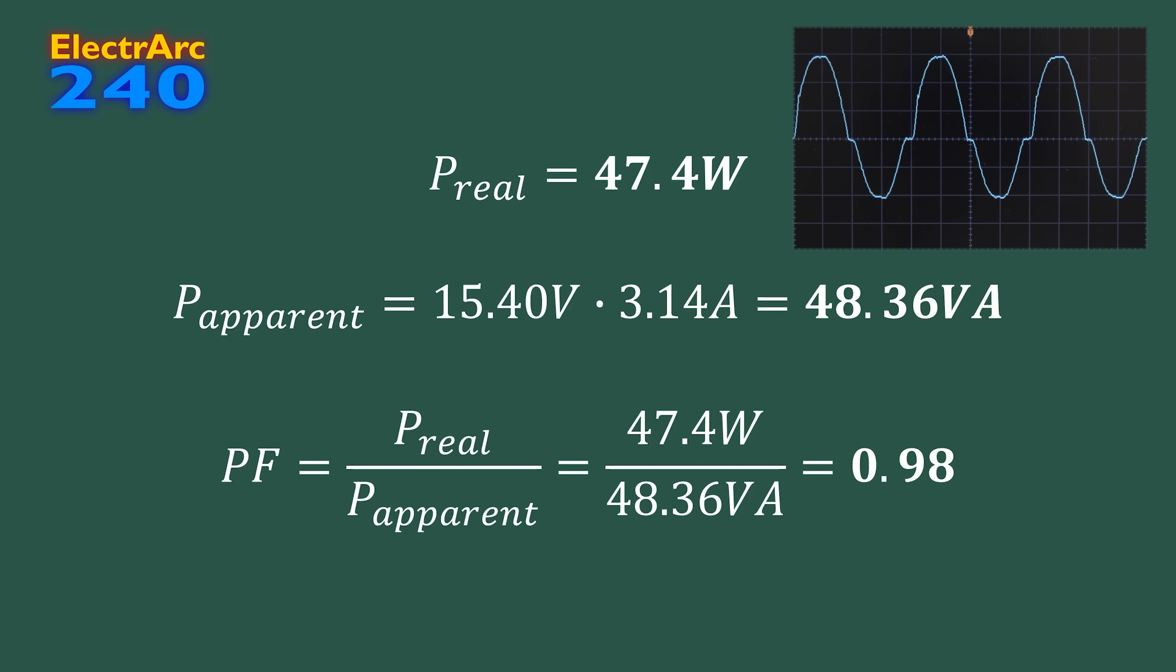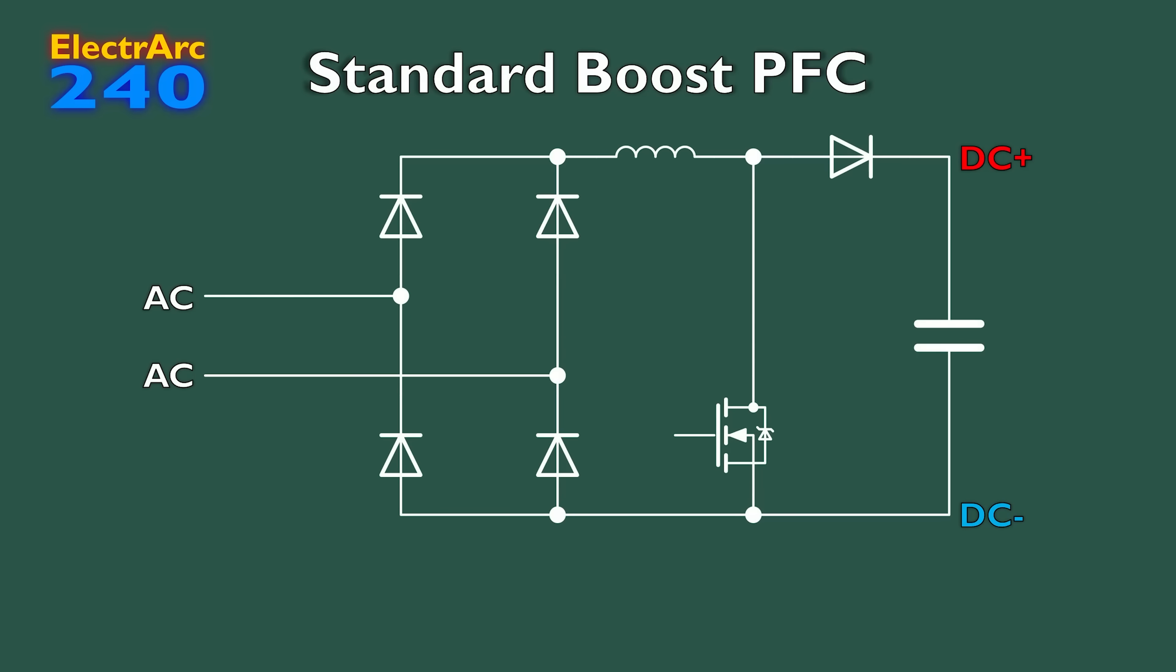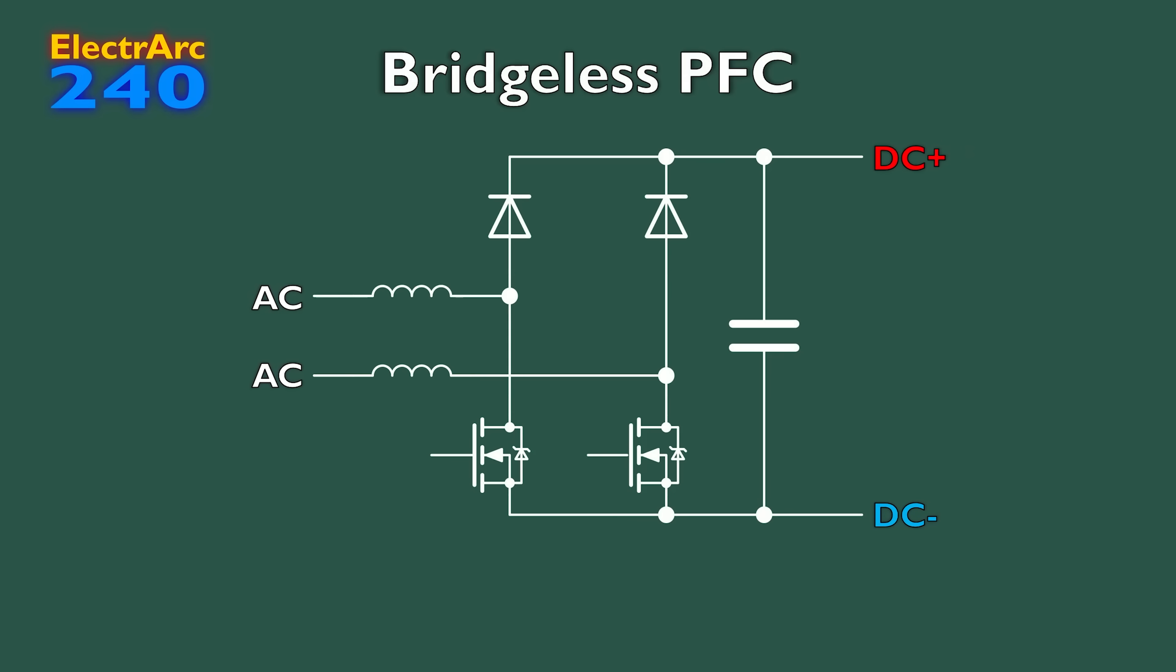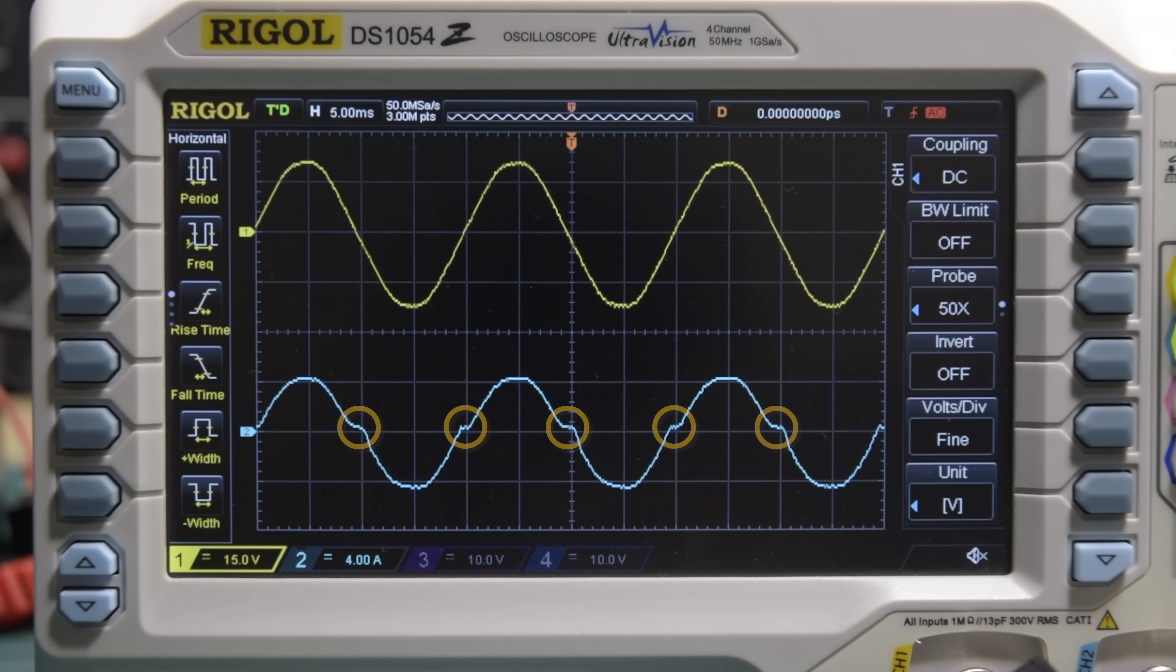Now, before we wrap up, I just want to take a quick look at some more advanced active power factor correction circuits, all based on the same boost converter principle, but with the goal of reducing component count and improving efficiency. First of all, we have bridgeless PFC, which basically just swaps the rectifier for a pair of boost converters, with one operating on the positive half cycle, and the other on the negative. While this does increase complexity a bit, there can be a decent efficiency improvement, and the distortion that occurs at the zero crossing of the AC can be reduced.